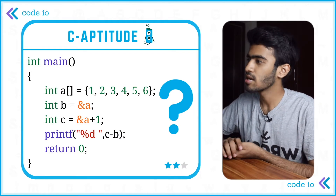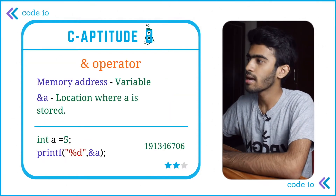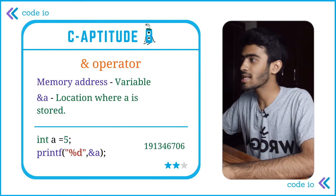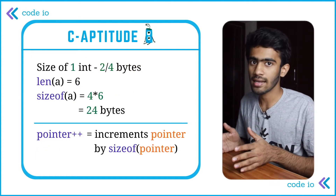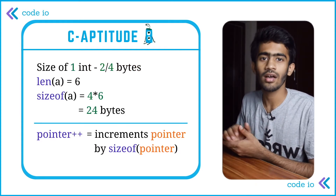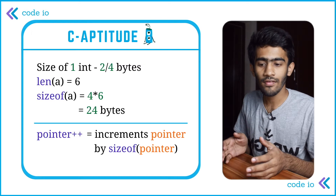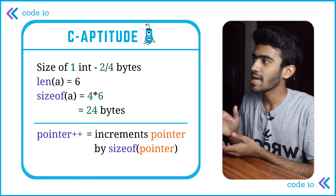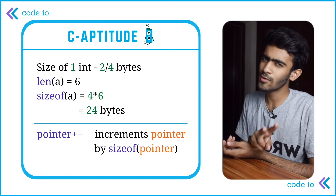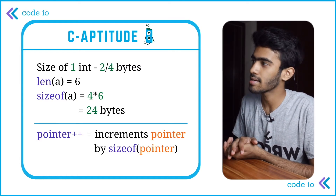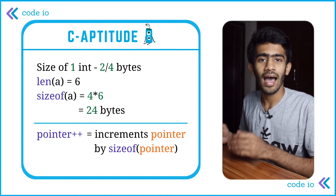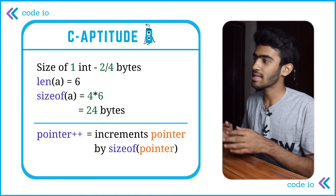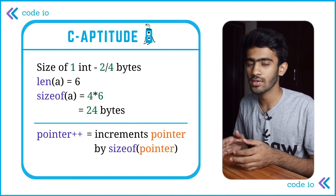This is the question. This is the ampersand operator — that's why we print the memory address where the variable is stored. This involves pointers. If we have an array, we print the pointer. The size of int in modern compilers is 4. The length of the array is 6, with all numbers 1 to 6. So the size of a — that's the size of the pointer — is 4 into 6, which is 24.